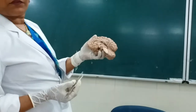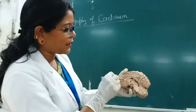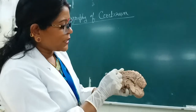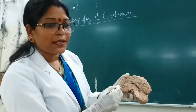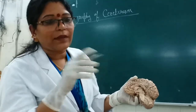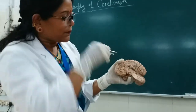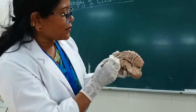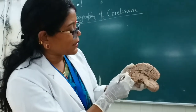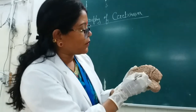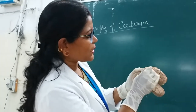We are concerned here with the sulci and gyri of the medial surface. On the medial surface, around the corpus callosum, there is a sulcus known as the callosal sulcus. Just above it — approximately 1 cm above — running parallel to the callosal sulcus is the cingulate sulcus. You can see here, this is the cingulate sulcus.